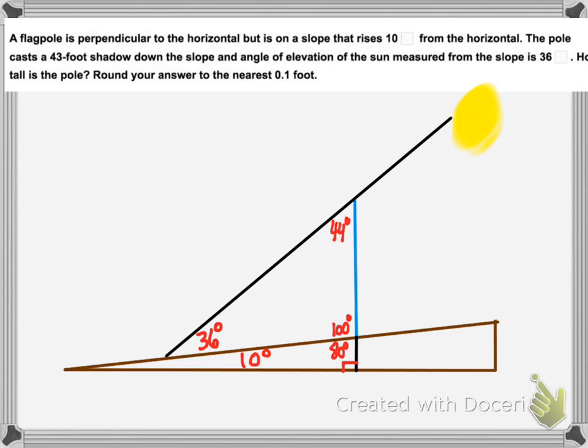And the last thing we know is that the shadow is 43 feet long. Now another important word here in this sentence was that it cast the shadow down the slope. That's how I knew to draw it this way, as opposed to having the Sun on the other side where the shadow is going up the slope.